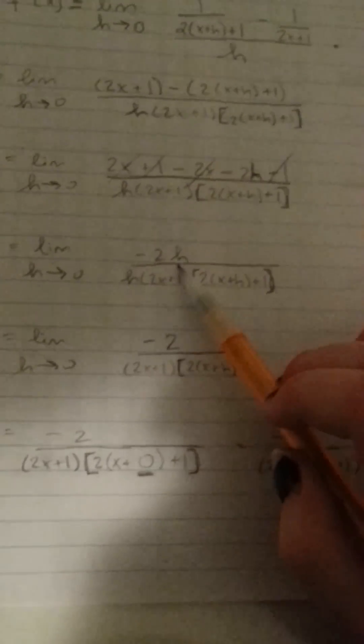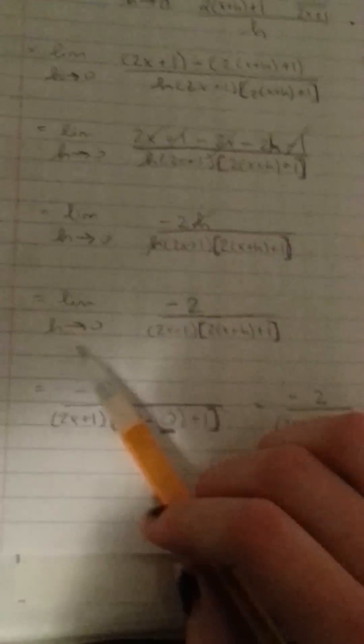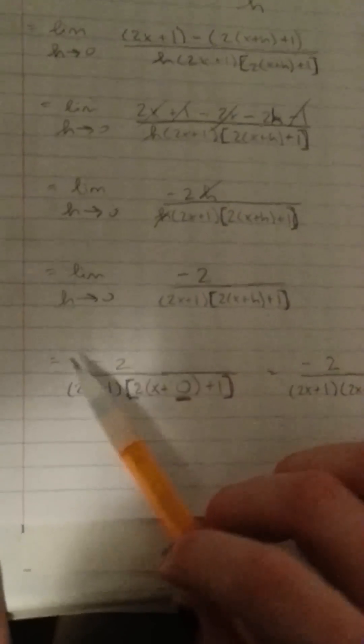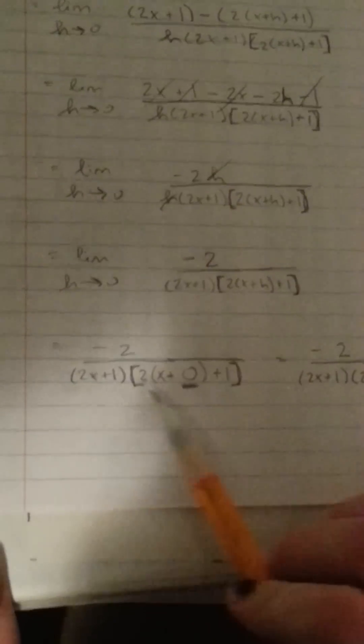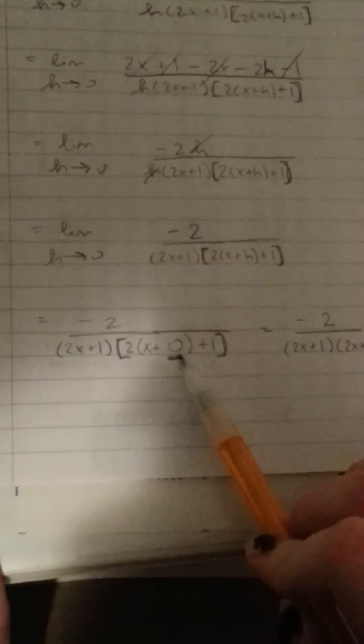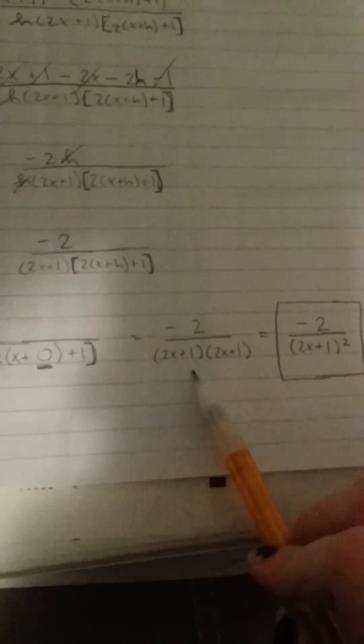This bottom h and this top h are going to cancel out. So then we're going to be left with the limit as h approaches zero, which is going to be negative 2 over 2x plus 1 times 2x plus h plus 1. Now we can stop writing the limit because we're actually going to put zero in where h goes. So we're left with negative 2 over 2x plus 1 times 2x plus 1, which we can write as negative 2 over 2x plus 1 squared. That's the answer to our problem using the limit process.